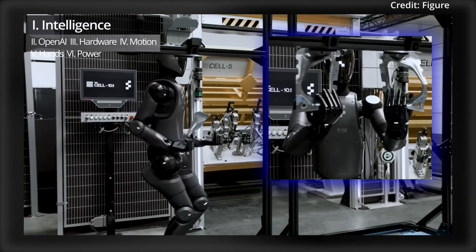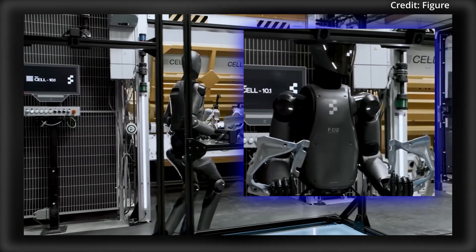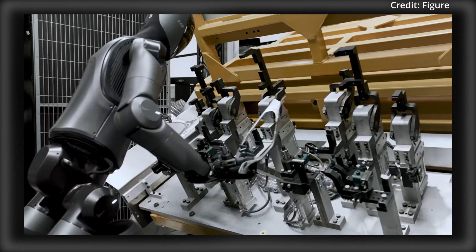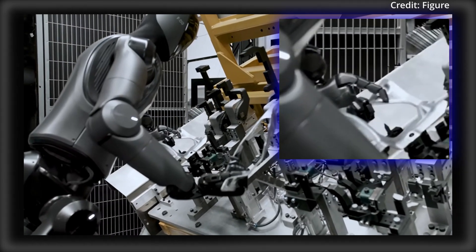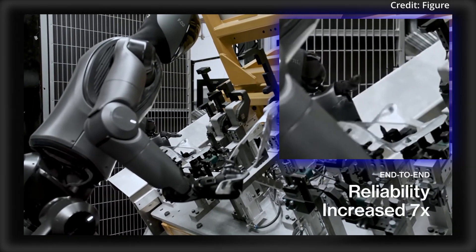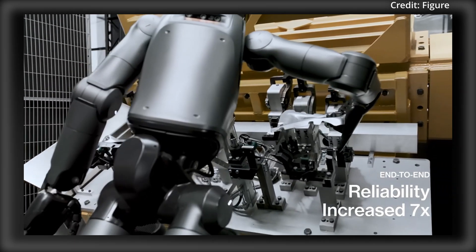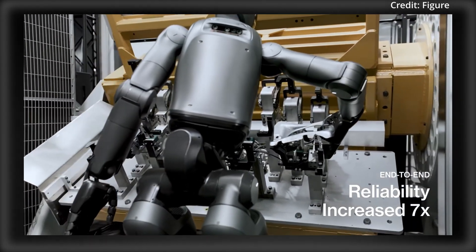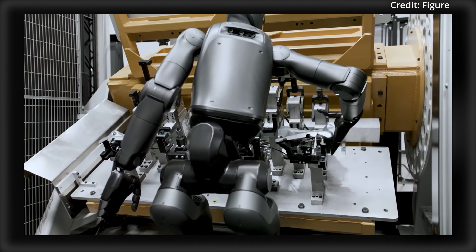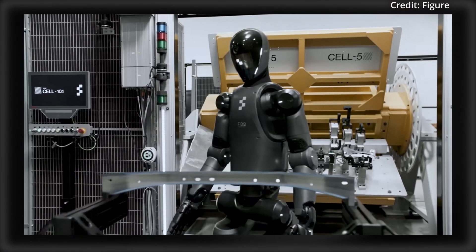Currently, the fleet is executing an incredible 1,000 fully autonomous placements per day at BMW, demonstrating end-to-end reliability and scalability far beyond its predecessor. Such placements involve tasks like organizing inventory, fetching items, or performing intricate human-like actions in real-world environments.